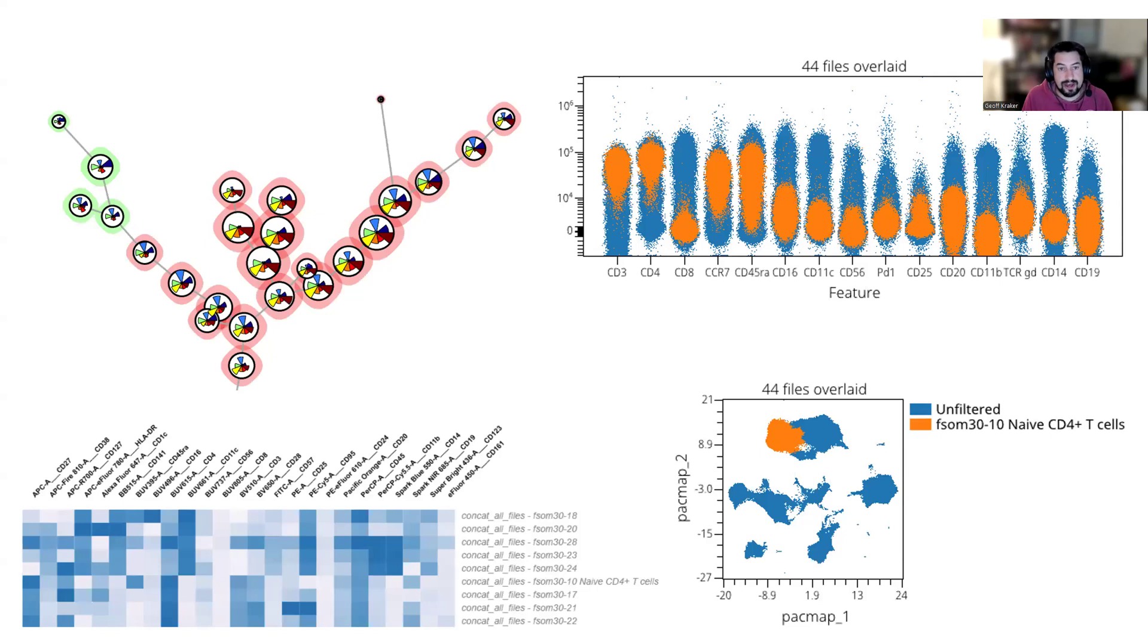Here's some examples of how to visualize clustering data. We have this classic minimum spanning tree with, in this particular case, these star plots. The larger dots represent more events. The smaller dots represent fewer events. The colored halos are the different metaclusters these clusters are part of. This is a classic way to look at clustering data.